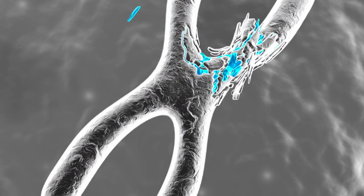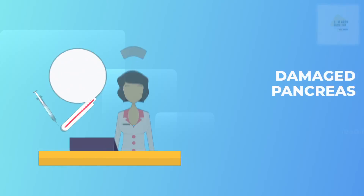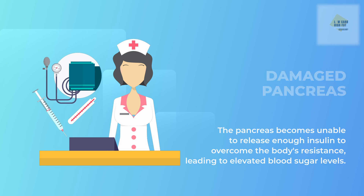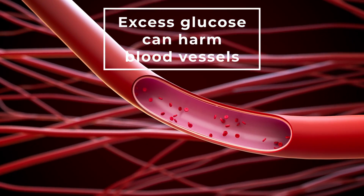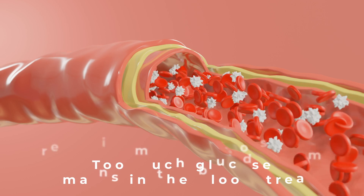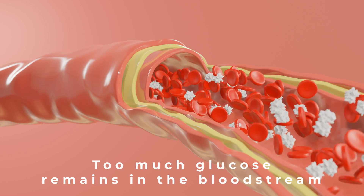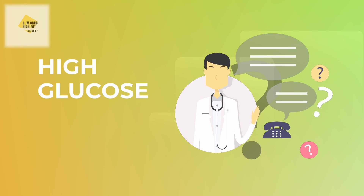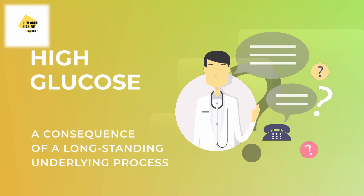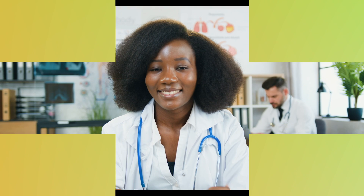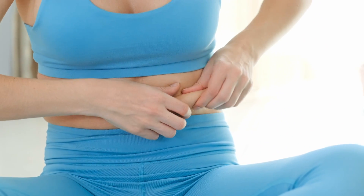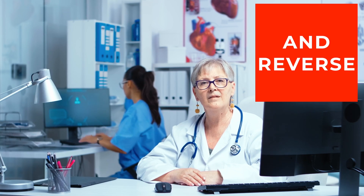As damage to the insulin-producing cells in the pancreas progresses, the pancreas becomes unable to release enough insulin to overcome the body's resistance, leading to elevated blood sugar levels. Excess glucose in the blood is problematic because it can harm blood vessels, and the body's tissues are unable to efficiently use glucose for energy. It's essential to realize that high glucose levels are a consequence of a long-standing underlying process. The good news is that diet and exercise can reduce insulin resistance and may assist in preventing or even reversing diabetes.